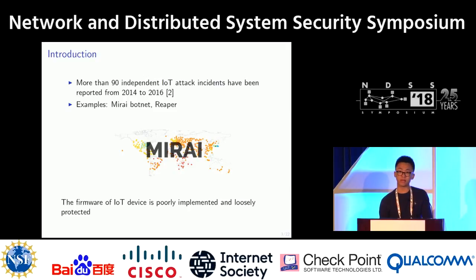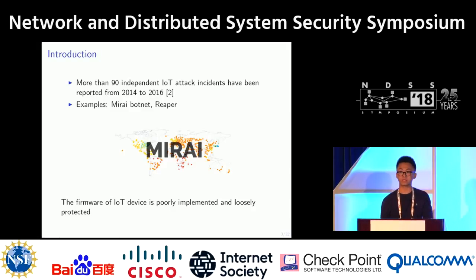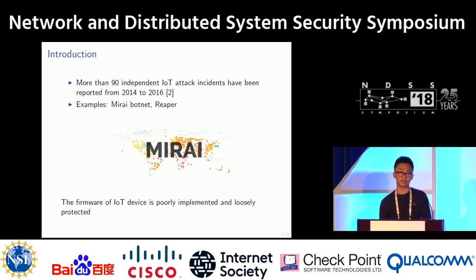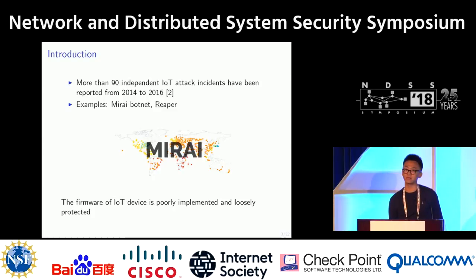A recent study shows that more than 90 independent IoT attacks have been reported from 2014 to 2016. For example, the Mirai botnet exploits the default credential of IoT devices, and more recently, the Reaper exploits device vulnerabilities to launch attacks against online services. This reveals that many IoT devices are poorly implemented and loosely protected.